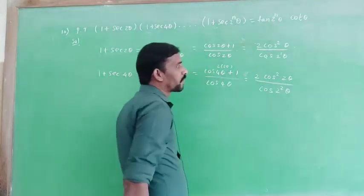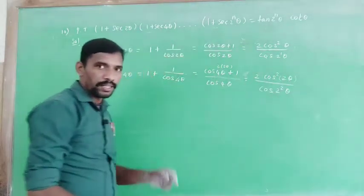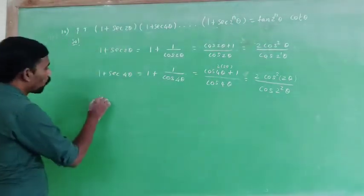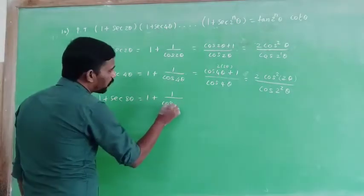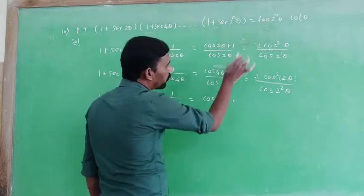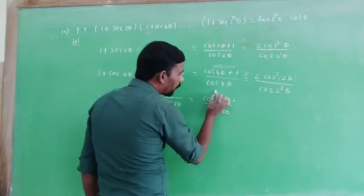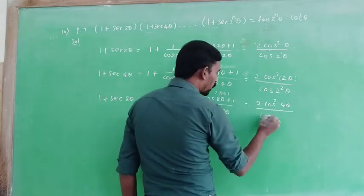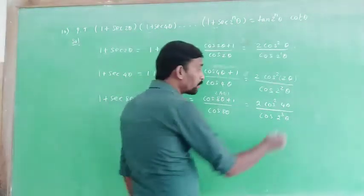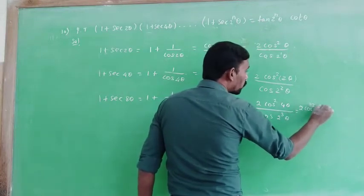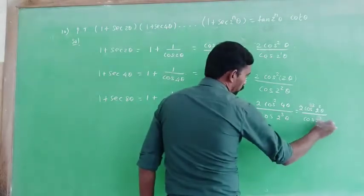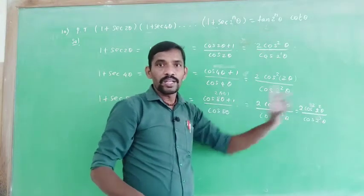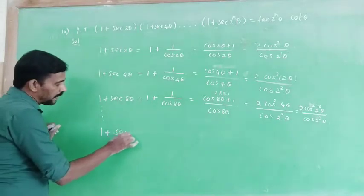We write 2^1, then 2 squared, then 2 divided by 2 squared, then 2 power 3, and so on. So we have: 2·cos²(2θ) divided by cos(2³θ); then 2·cos²(2²θ) divided by cos(2³θ); then 2·cos²(2³θ) and so forth.